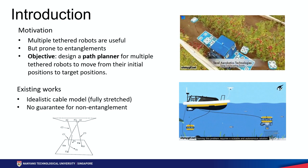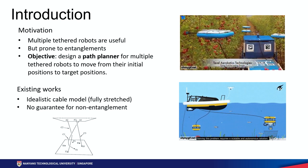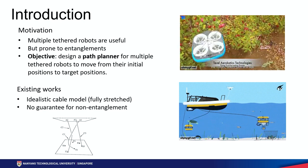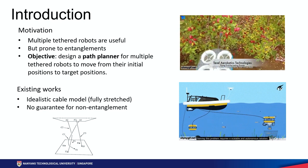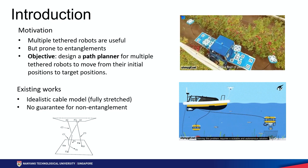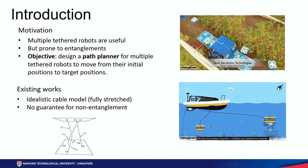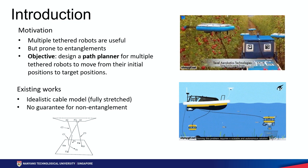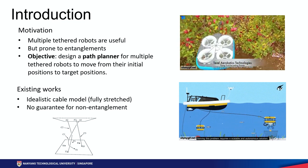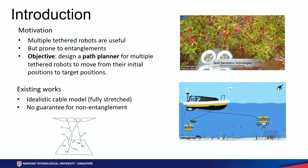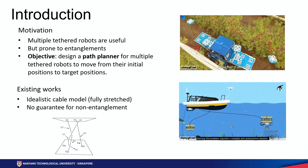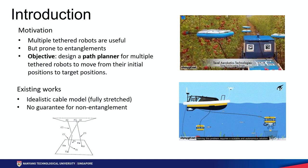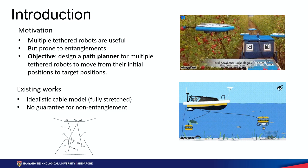Tethered robots are robots connected to cables which supply communication link or power supply to the robots. Multiple tethered robots are very useful. The right video shows multiple tethered aerial robots collecting fruits and multiple underwater robots collecting sea trash. However, multiple tethered robots are prone to entanglements.